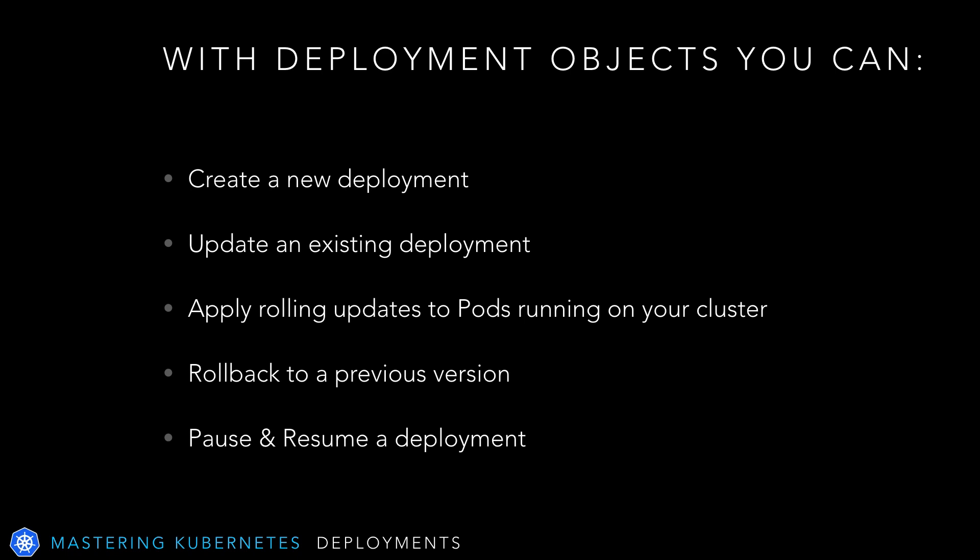With deployment objects, you can do a variety of things. You can create a deployment, update an existing deployment, apply rolling updates to pods running on your cluster, roll back to a previous version, or pause and resume a deployment. We've already done the first thing on the list — in fact, we've already done the second as well, when we set the existing deployment to a replication factor of four in the previous lecture.